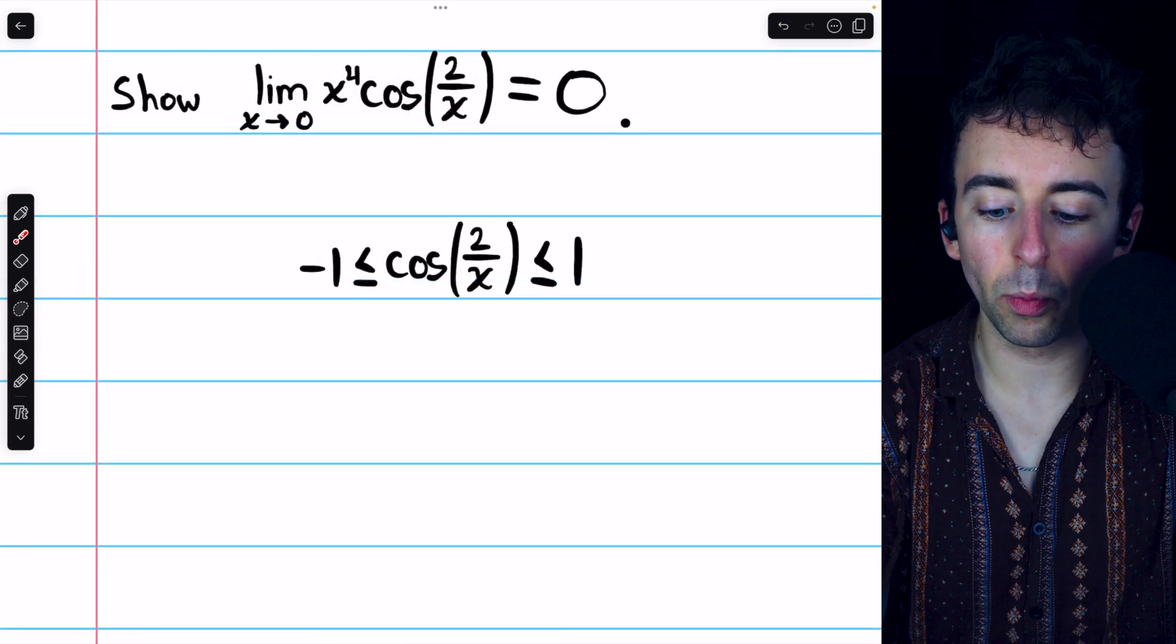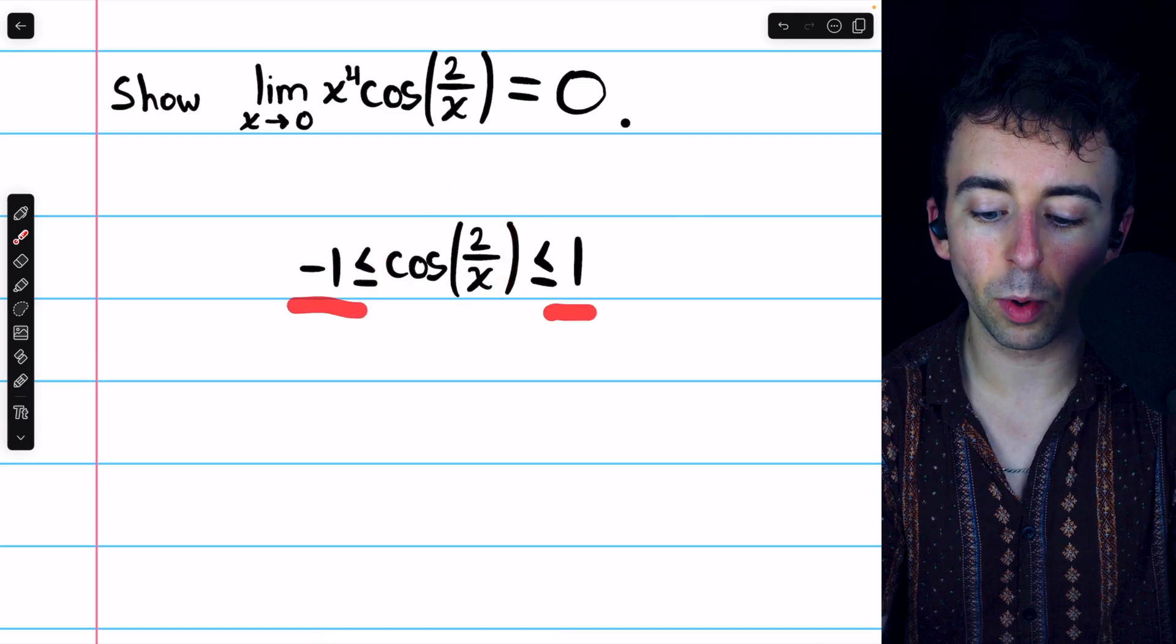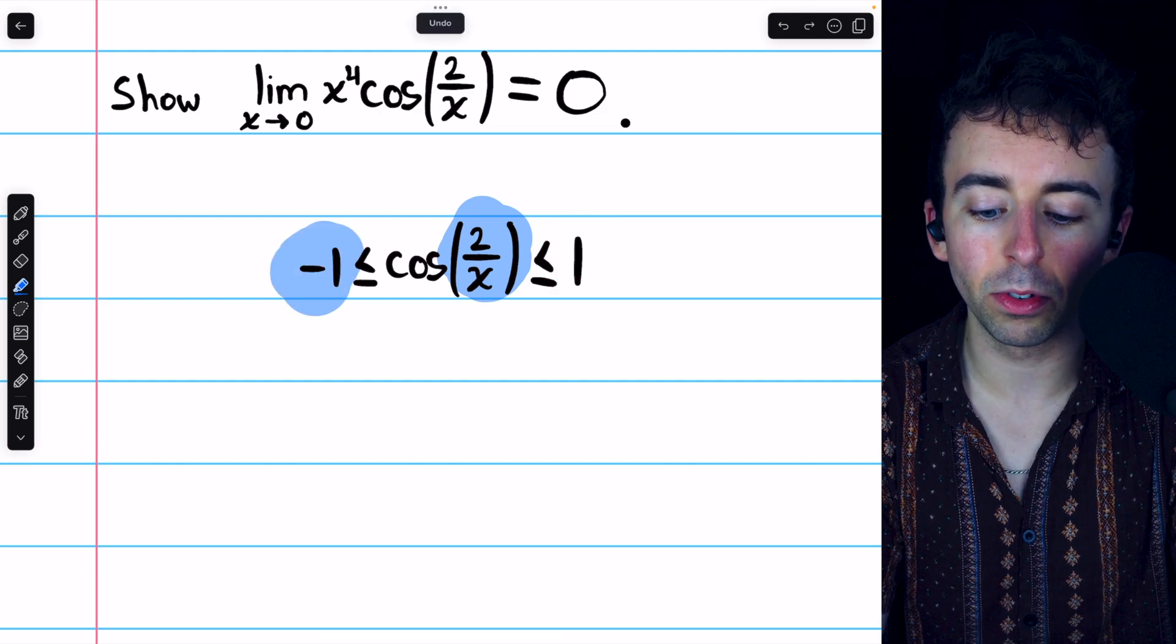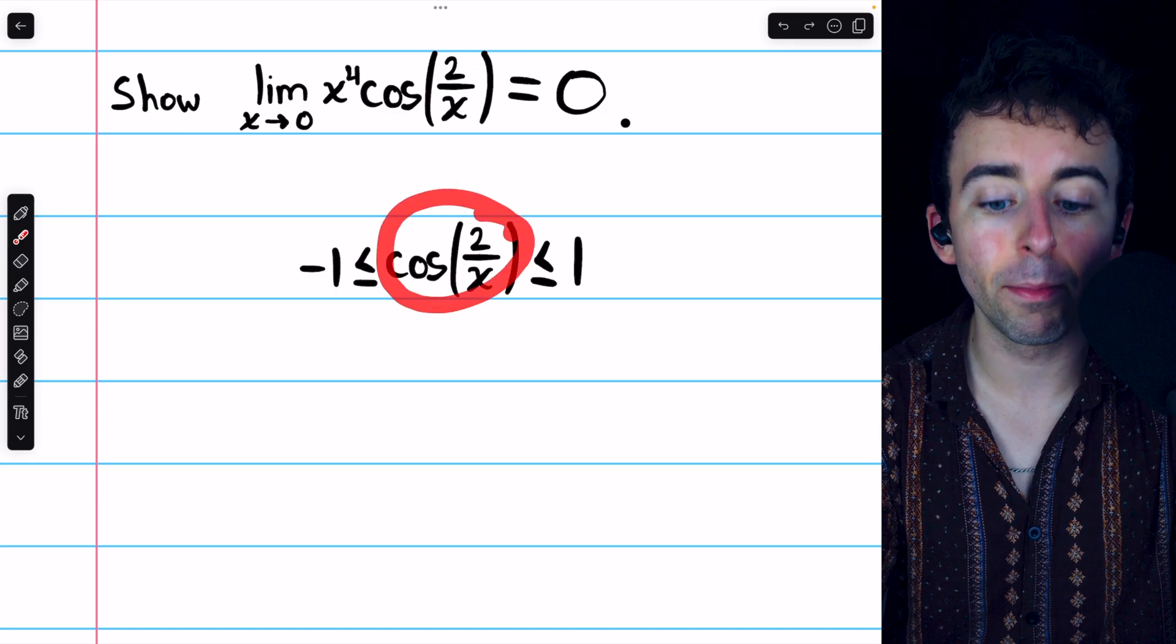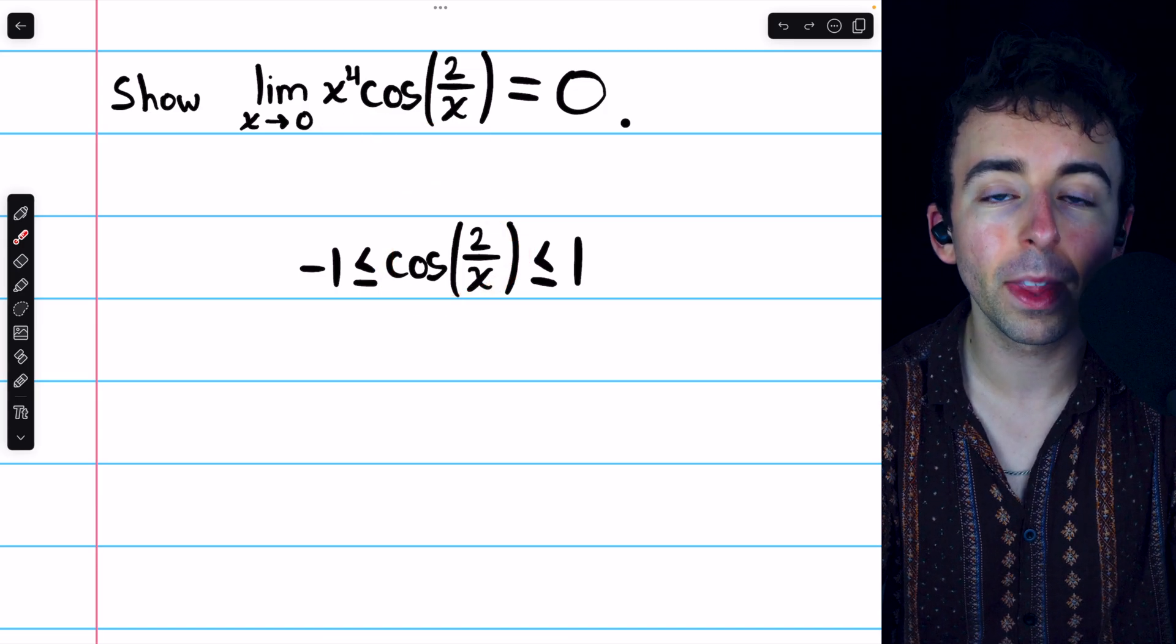So we start there with what we know, cosine of 2 over x is between negative 1 and positive 1. It doesn't matter what the input is, the cosine function always lies between those two values. Now, we have to change this expression in the middle to match the expression we actually want to prove something about.